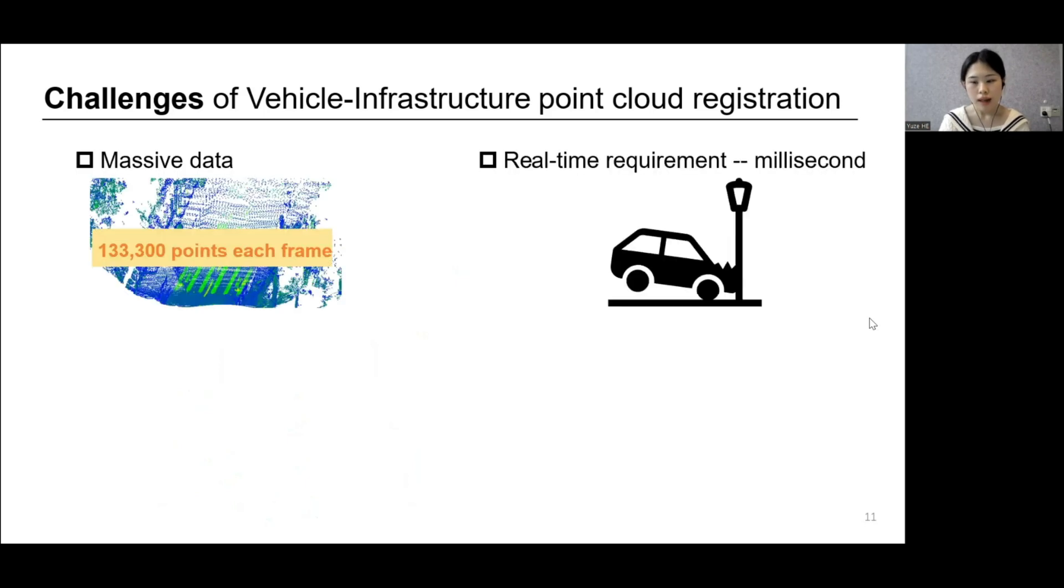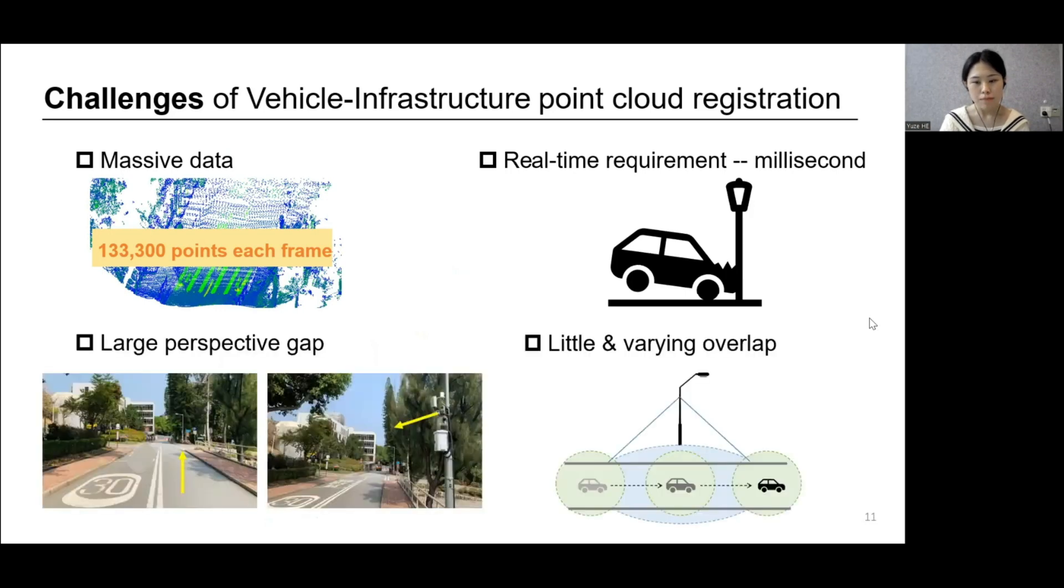First, each point cloud frame contains massive points and needs to be processed in real-time. Second, there exists a large perspective gap between vehicle and infrastructure point clouds, and the overlap between them is not only small but also varies dynamically as the vehicle moves.